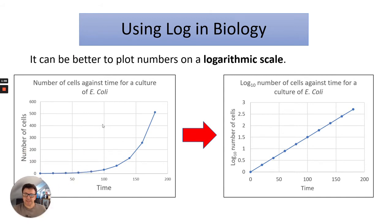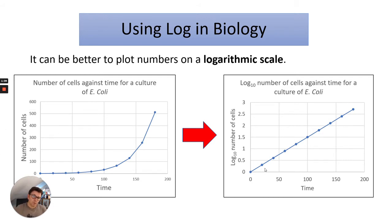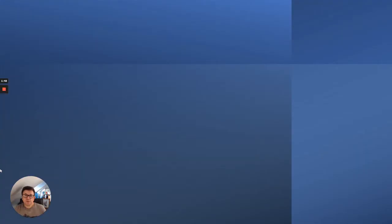Here's the original graph, and then here is the log10 number of cells against time for a culture of E. coli. The points are evenly spread, so you can see it's spread out the points so it's easier to read.